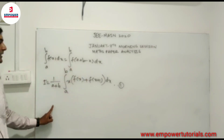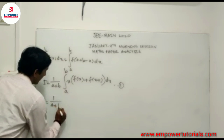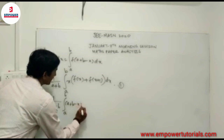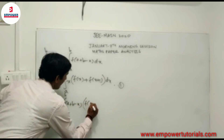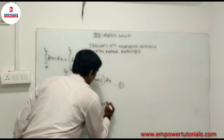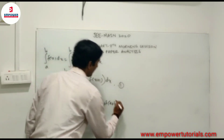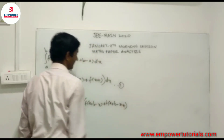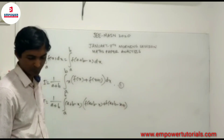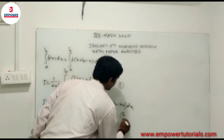By applying this property, we get I = 1/(a+b) times the integral from a to b of (a + b - x)·[f(a + b - x) + f(a + b - x + 1)] dx. This is the second integral.